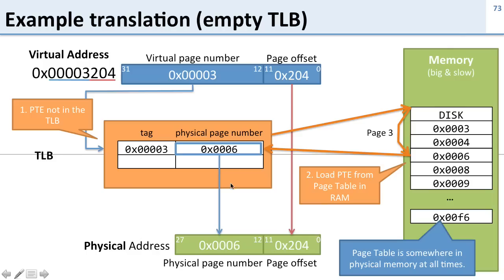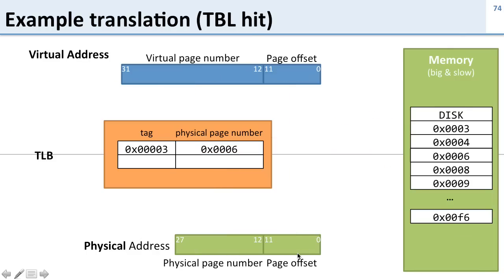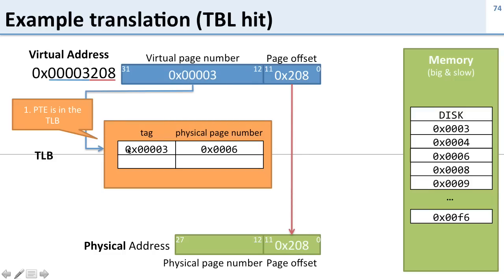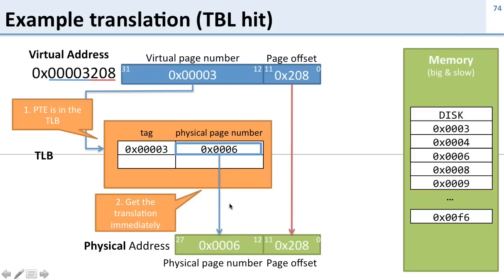Now we've loaded this into our TLB, and we can go ahead and do our translation, giving us our physical address. Now here comes another one: virtual address 0003208. Again, we've got a page offset and a virtual page number. The page offset goes straight through, and the virtual page number goes to look up in the TLB. This time we're going to have a hit in the TLB, because we actually have an entry for this. We get the translation immediately — this is the best case.